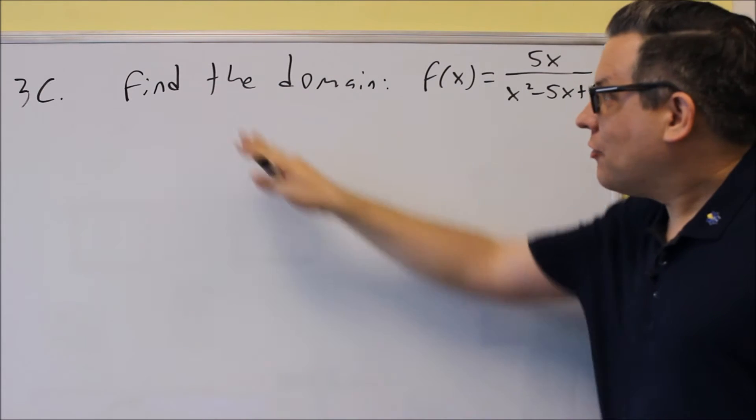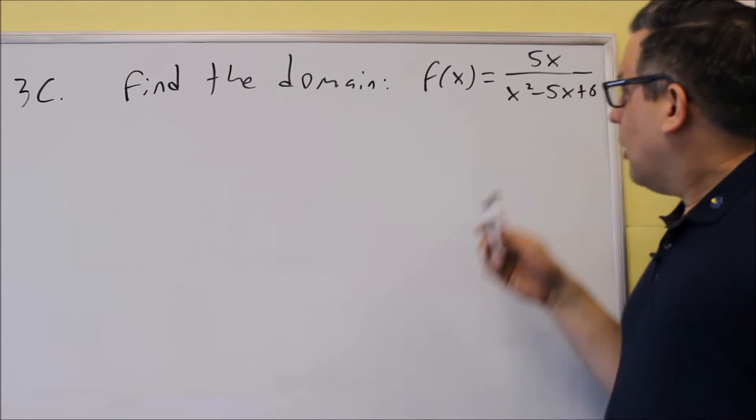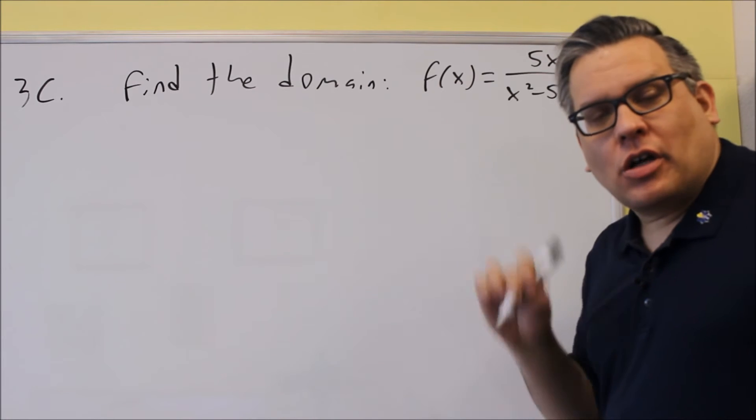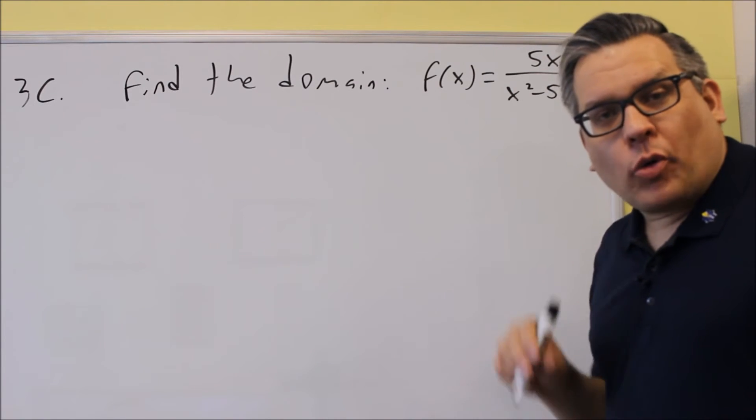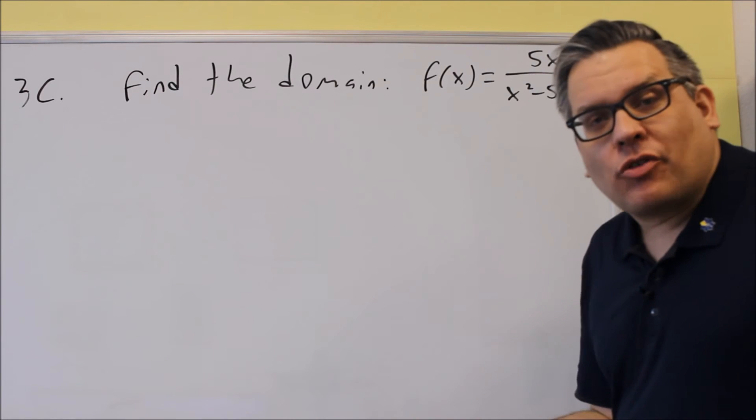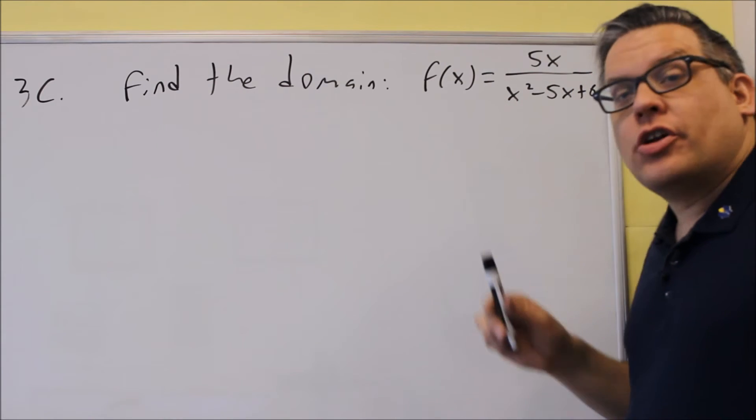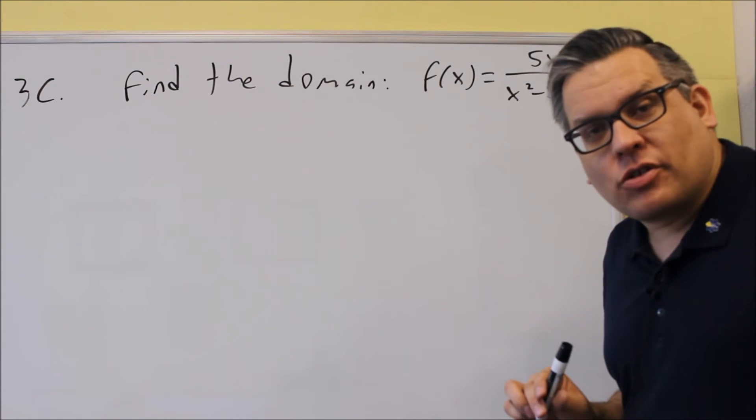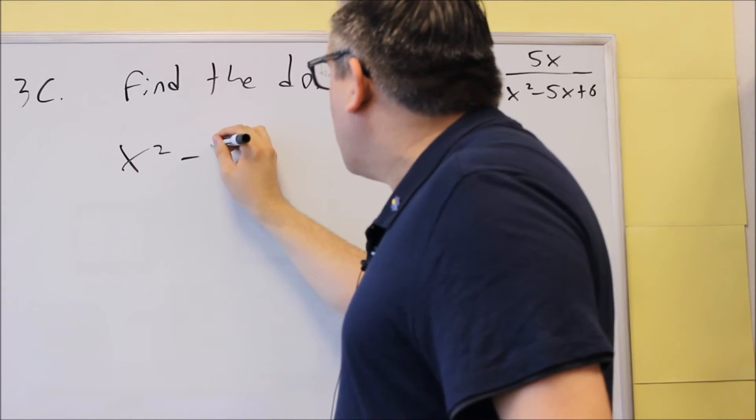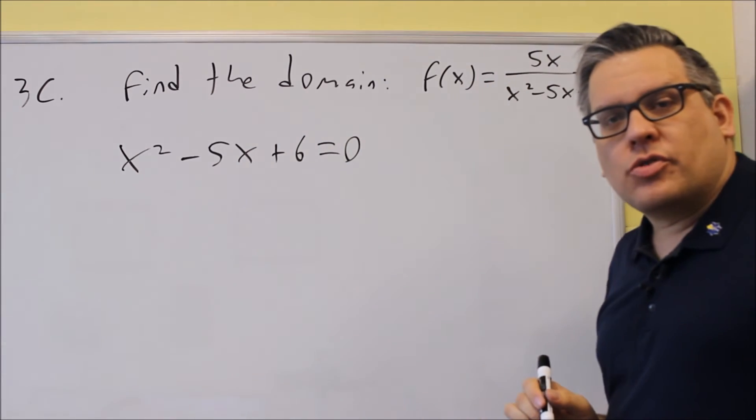For part C, we're finding the domain. We don't have any square roots to deal with this time. If we do have something on the bottom, that's a possibility of it equaling 0. So what we're going to do is we're going to set the bottom equal to 0. And whatever values that we find, we're not going to include those in our domain. Because remember, a domain, you can't include any numbers that cause division by 0. So let's take the bottom one. So we have something that we can factor.